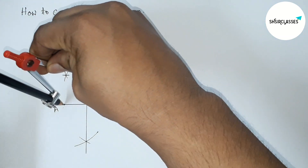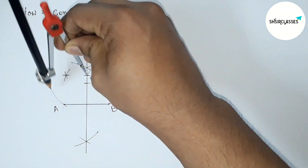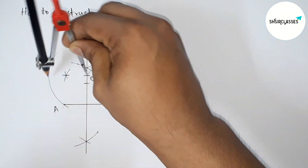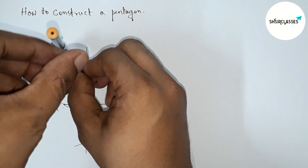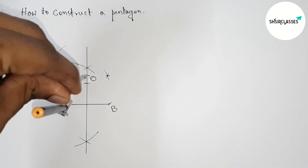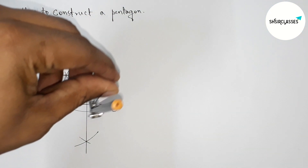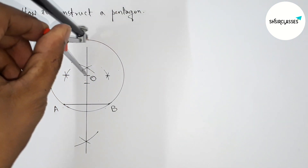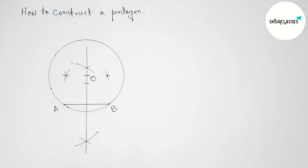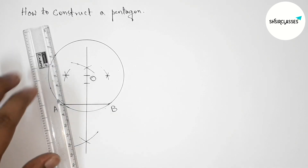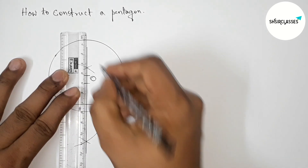Making O as the center and taking the radius OA, drawing a circle through points A and B.